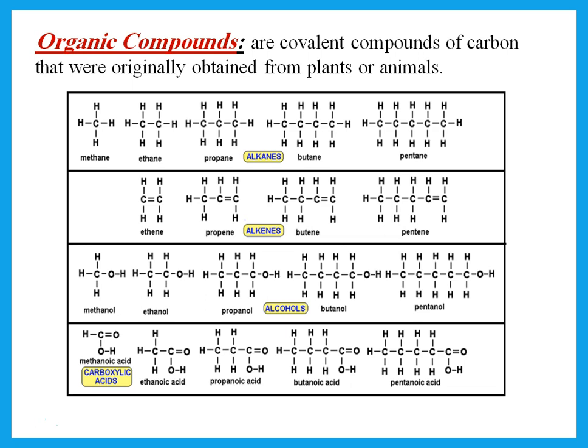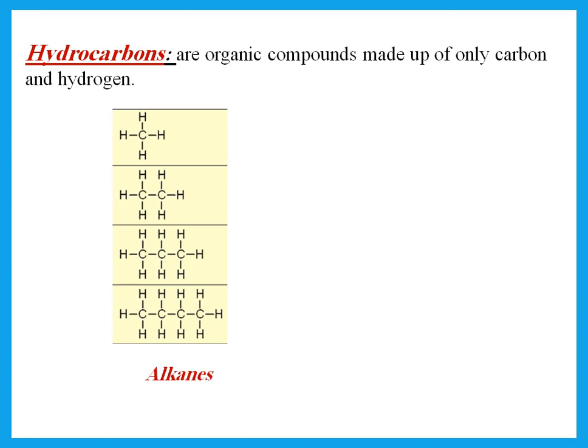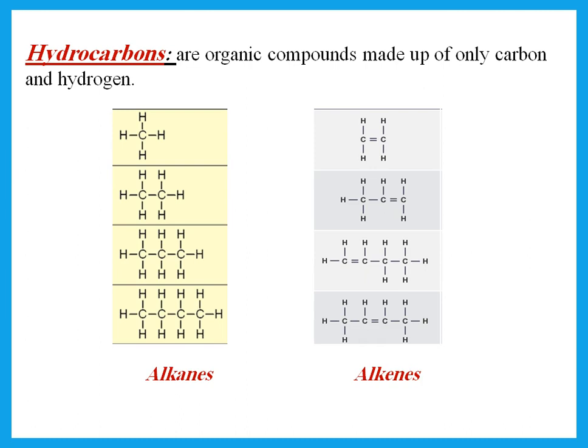In order to study organic compounds, we divide them into different groups. We have alkanes, alkenes, alcohols, and carboxylic acids — all different groups of organic compounds. One important type is hydrocarbons, which are organic compounds made up of only carbon and hydrogen. All organic compounds have carbon and hydrogen, but they could also have oxygen or nitrogen. If they have only carbon and hydrogen, then they are hydrocarbons. Alkanes and alkenes are both groups of hydrocarbons.